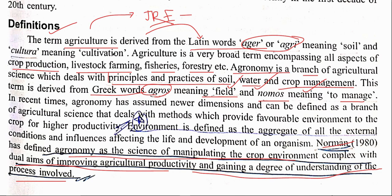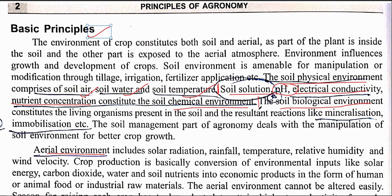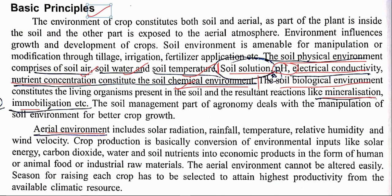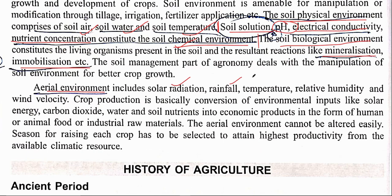The basic environments dealt with in agronomy are: soil physical environment (soil, air, water, temperature); soil chemical environment (soil solution, pH, electrical conductivity, nutrients); soil biological environment (microorganisms, mineralization, immobilization); and aerial environment (solar radiation, rainfall, temperature, relative humidity, and wind velocity). These are the four environments covered under agronomy principles.